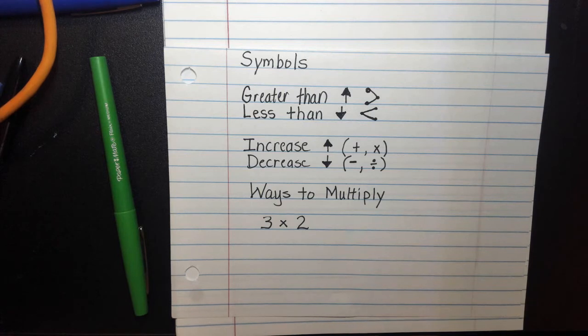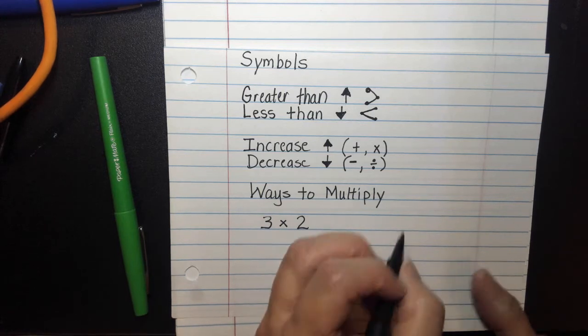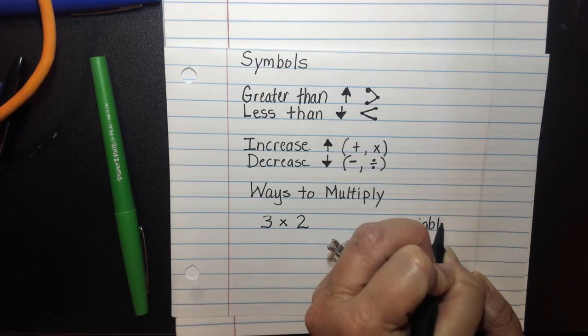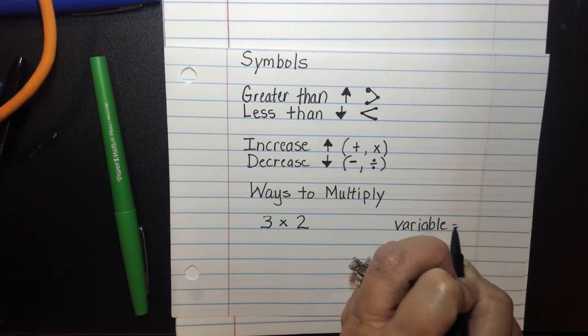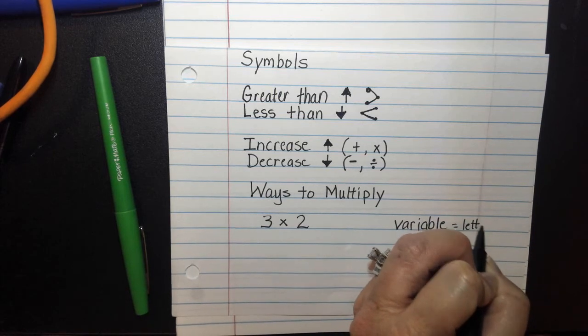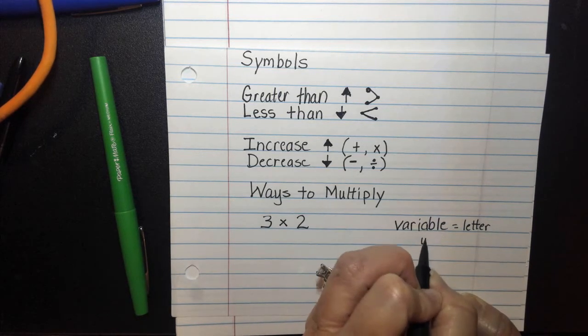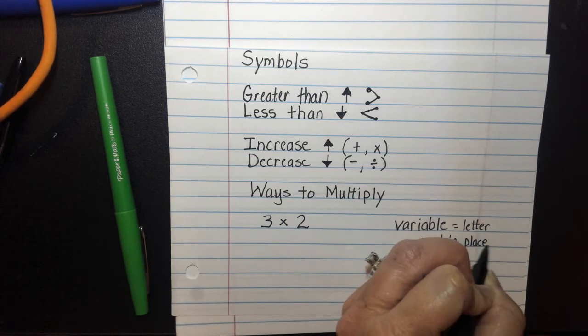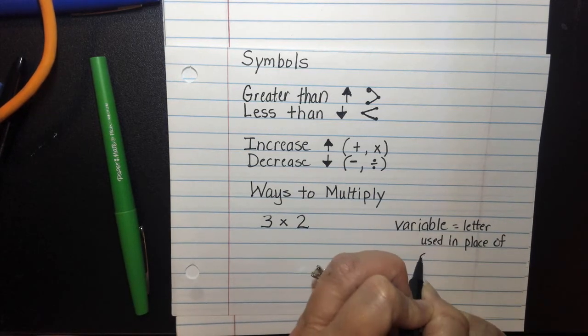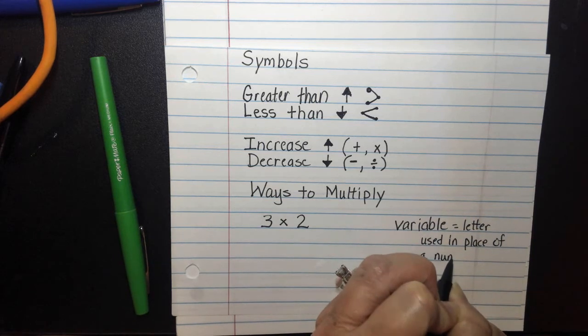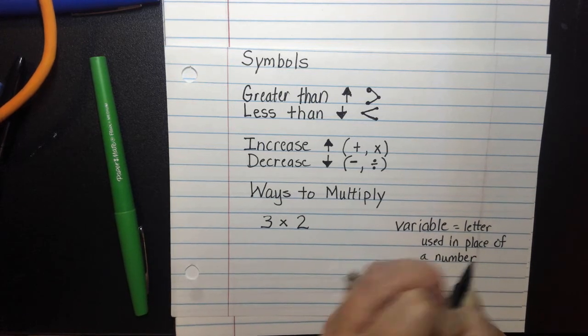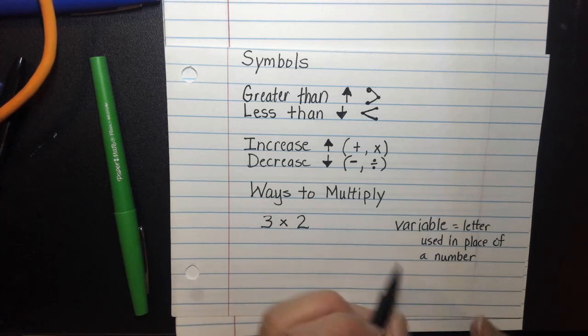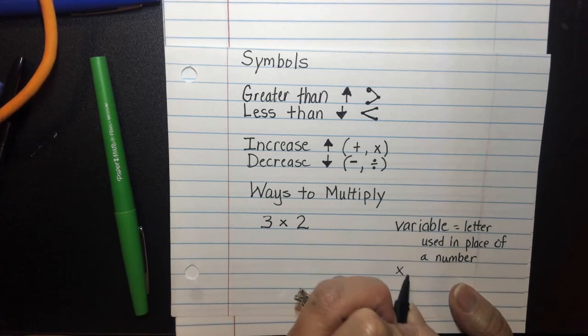So in fifth grade, we begin to introduce variables, which a variable is just a letter that we use in place of a number. So I'm going to write that word down. It's a letter used in place of a number. And so tonight, or today, I'm going to be using x as my variable.